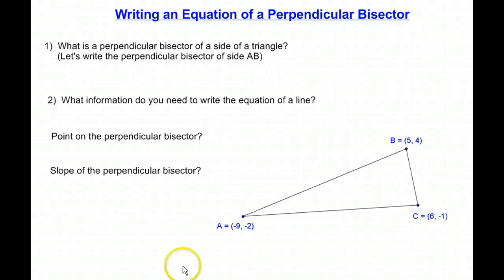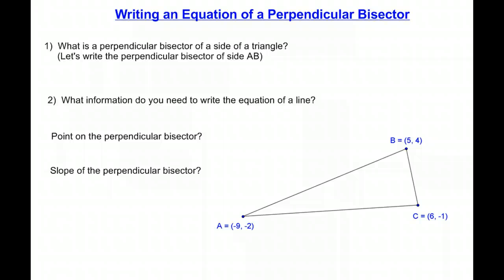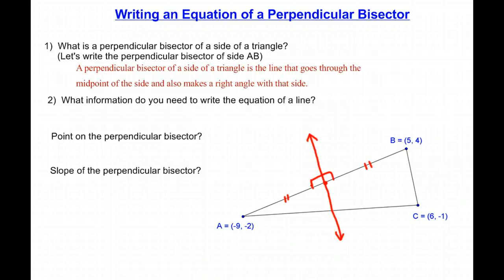Today we're going to cover how to write the equation of a perpendicular bisector. Before we can begin that, we better review exactly what a perpendicular bisector is. A perpendicular bisector of a segment breaks a segment into two equal parts and makes a right angle with that segment.